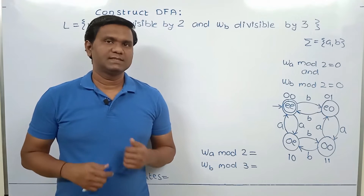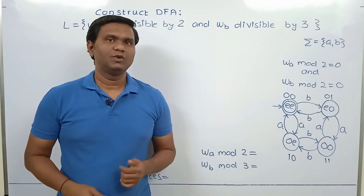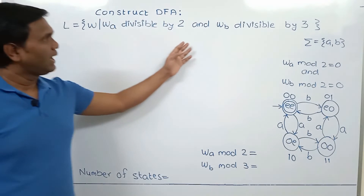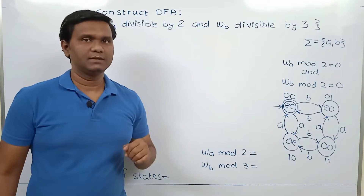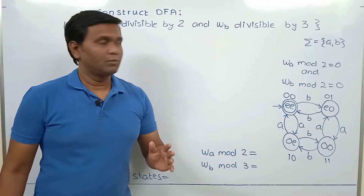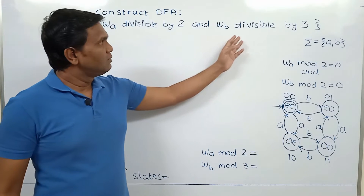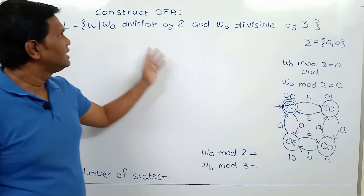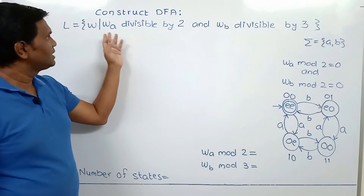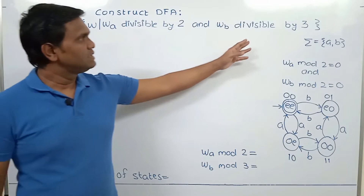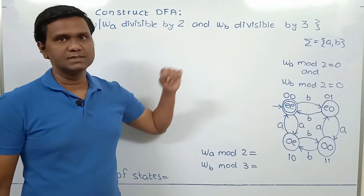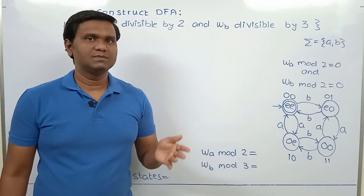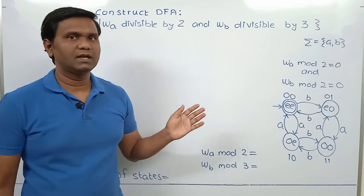In this lecture, we are going to study the next type of problem to design a DFA: number of A's divisible by 2 and number of B's divisible by 3. The type of problem has multiple divisible-by conditions on different symbols. Here, divisible by 2 is applied for number of A's, and divisible by 3 is for number of B's. Previously we have seen multiple divisible-by conditions but on the same symbol; here they are on different symbols.